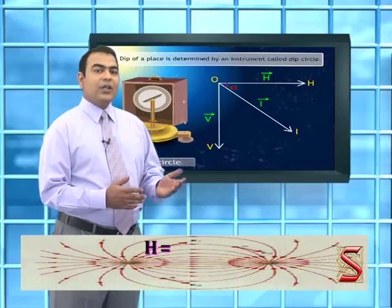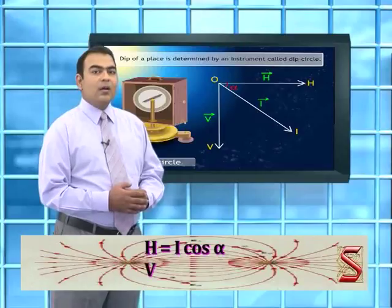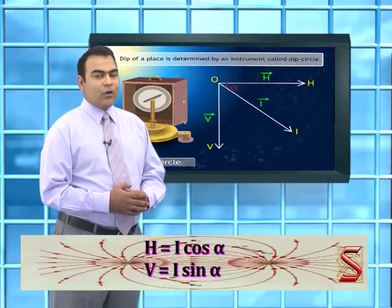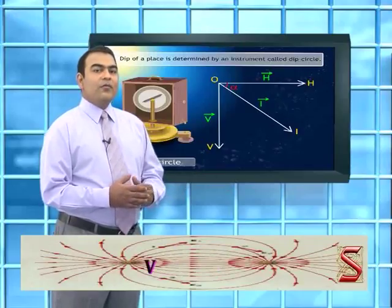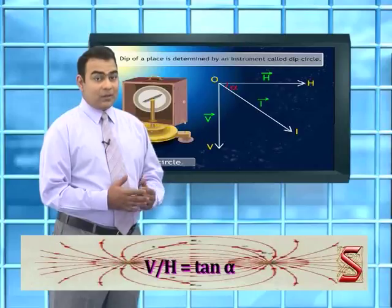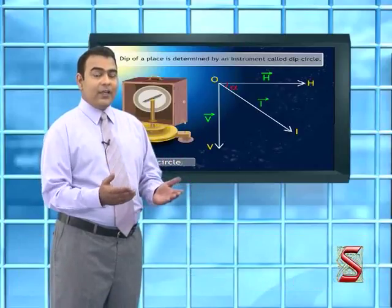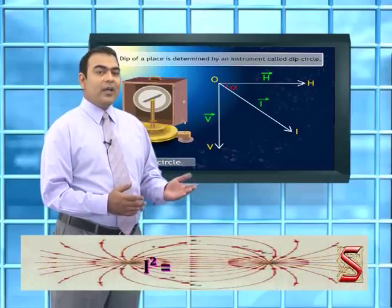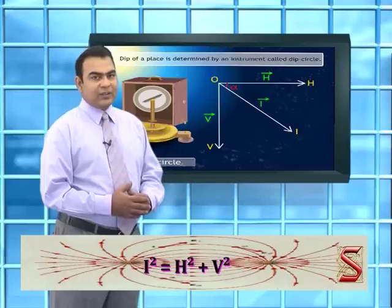H equals I cos alpha, and V equals I sin alpha. From these two equations, V divided by H equals tan alpha. The relation between I, V, and H is given by: I squared equals H squared plus V squared.